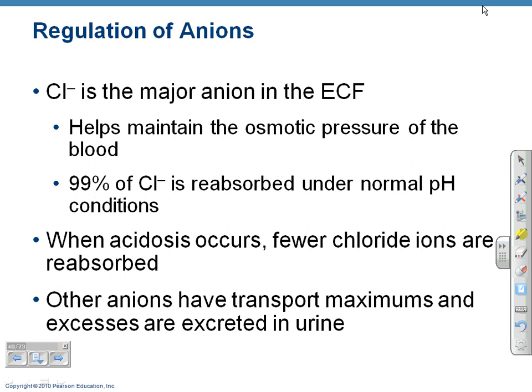Anything below 7.35 is considered acidosis for blood. Now, 7.3 is not acidic in chemistry — it's slightly basic since anything below 7 is acidic. But physiologically, 7.35 to 7.45 is the parameter for blood. Above 7.45 is alkalosis; below 7.35 is acidosis. So when acidosis occurs, fewer chloride ions are reabsorbed.